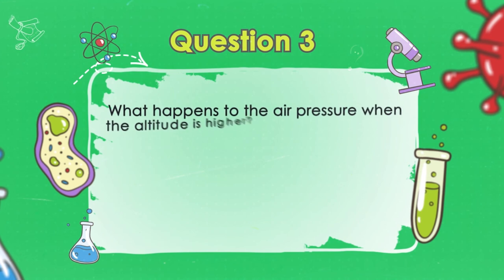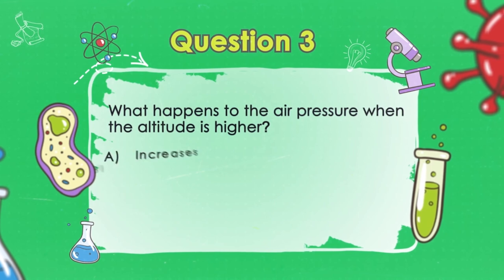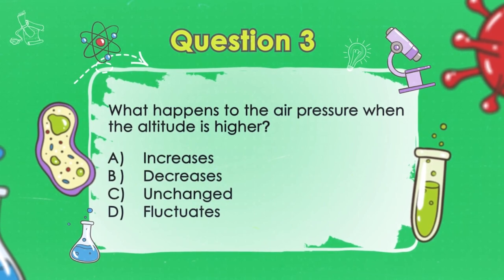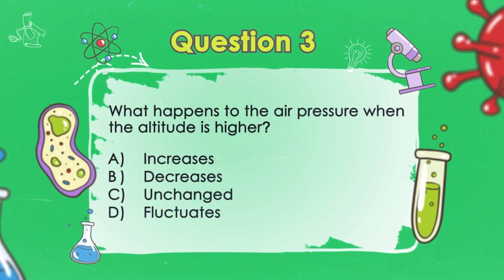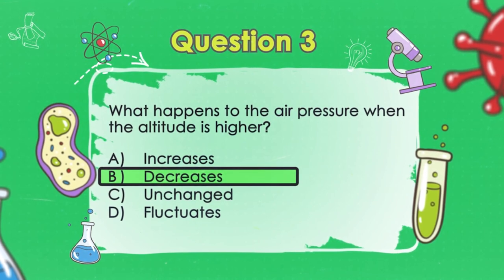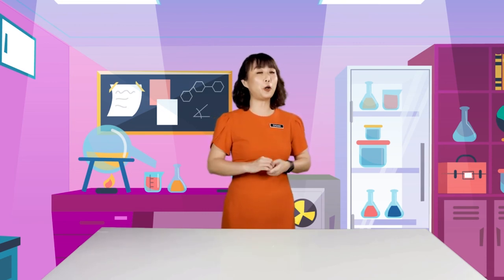Now, we have come to the last question. What happens to the air pressure when the altitude is higher? Excellent! The answer is B, the air pressure decreases. Well, boys and girls, we have come to the end of our lesson for today.